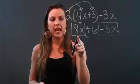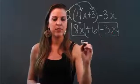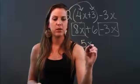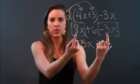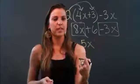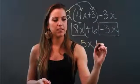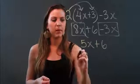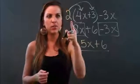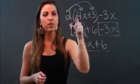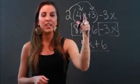So I'm doing 8x minus 3x, which is 5x. When you combine like terms, you only deal with the coefficients and keep the variable the same. Now I'm bringing down my plus 6, because there's nothing to combine that with, and I'm done.